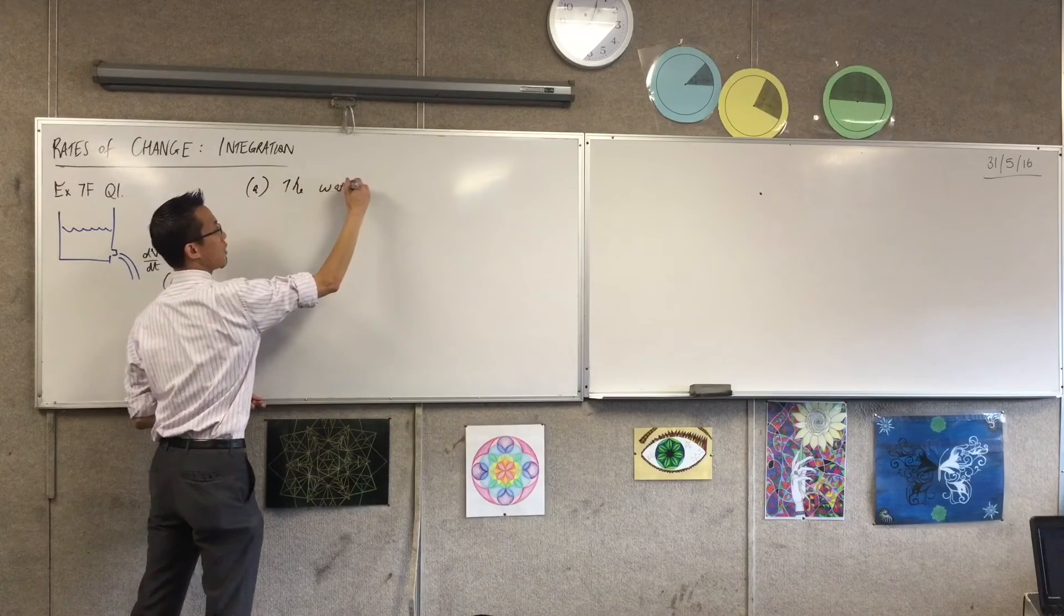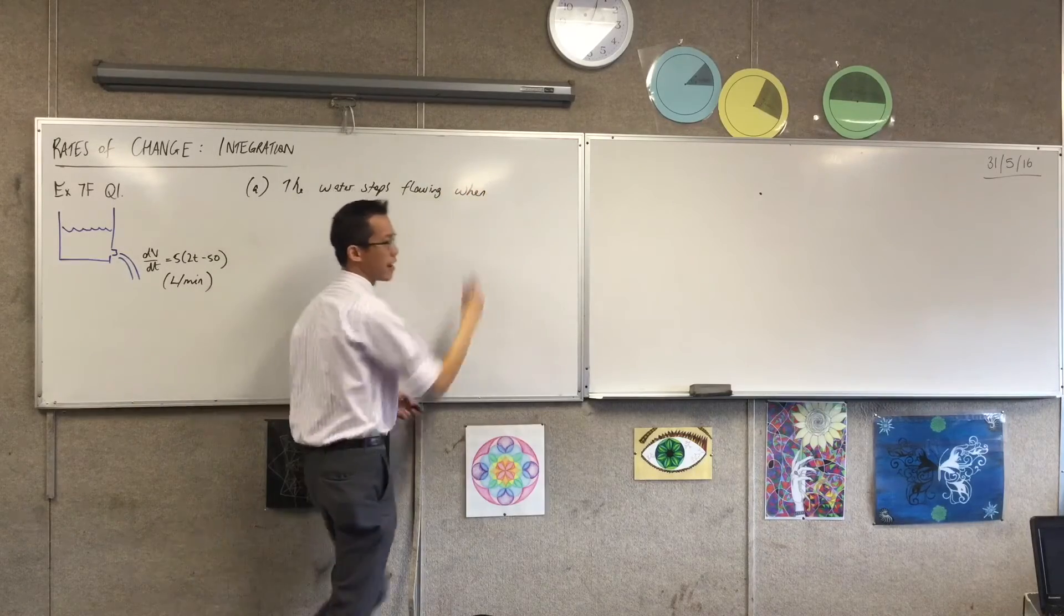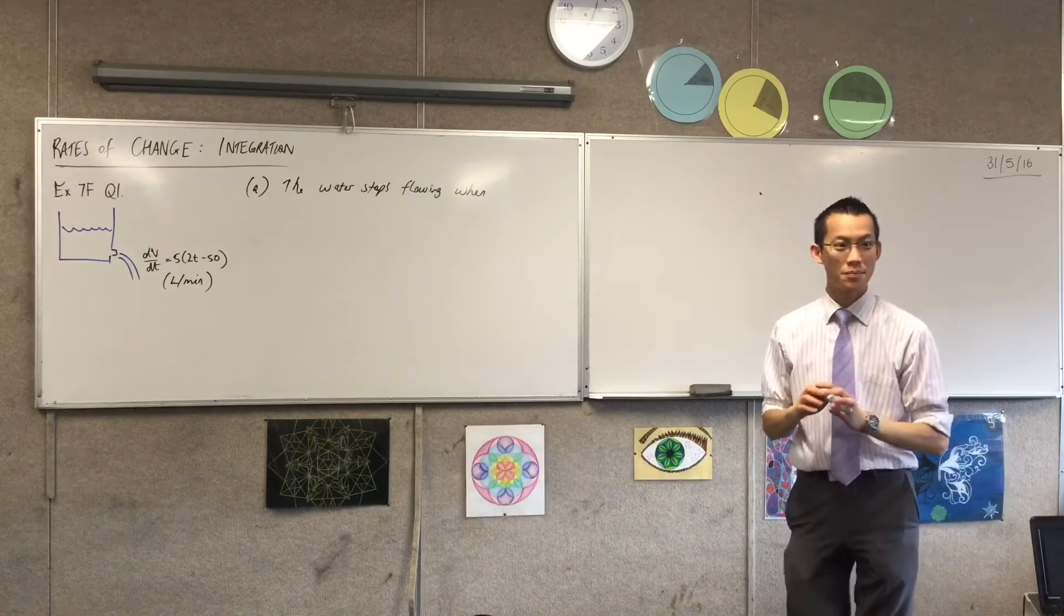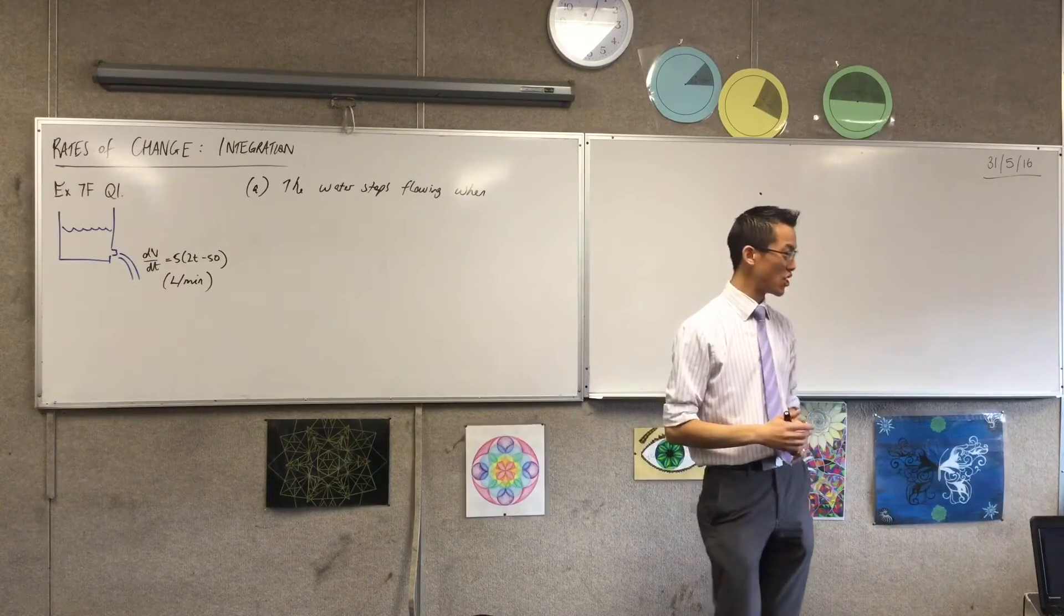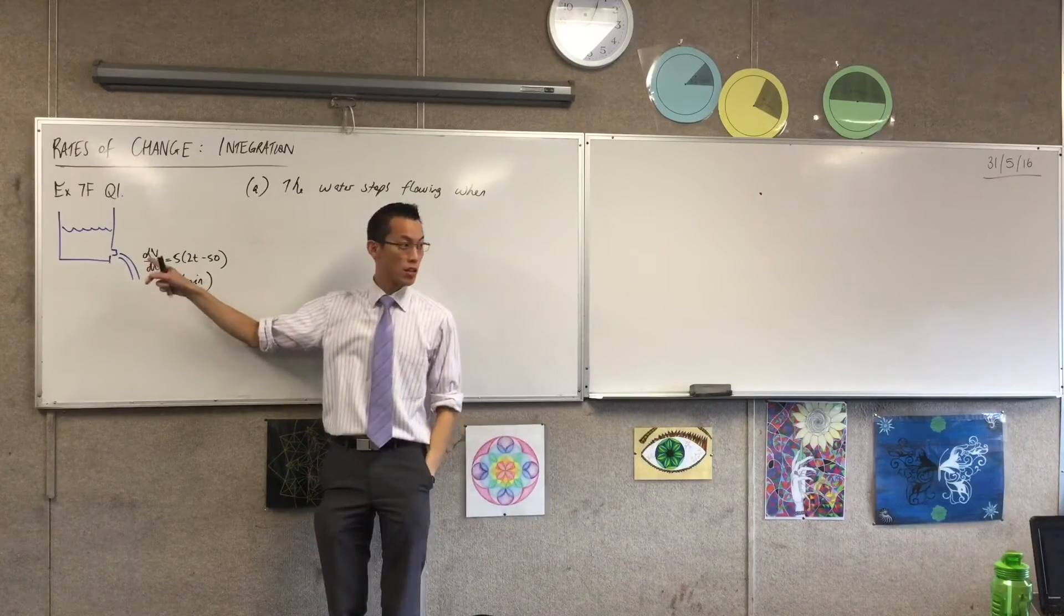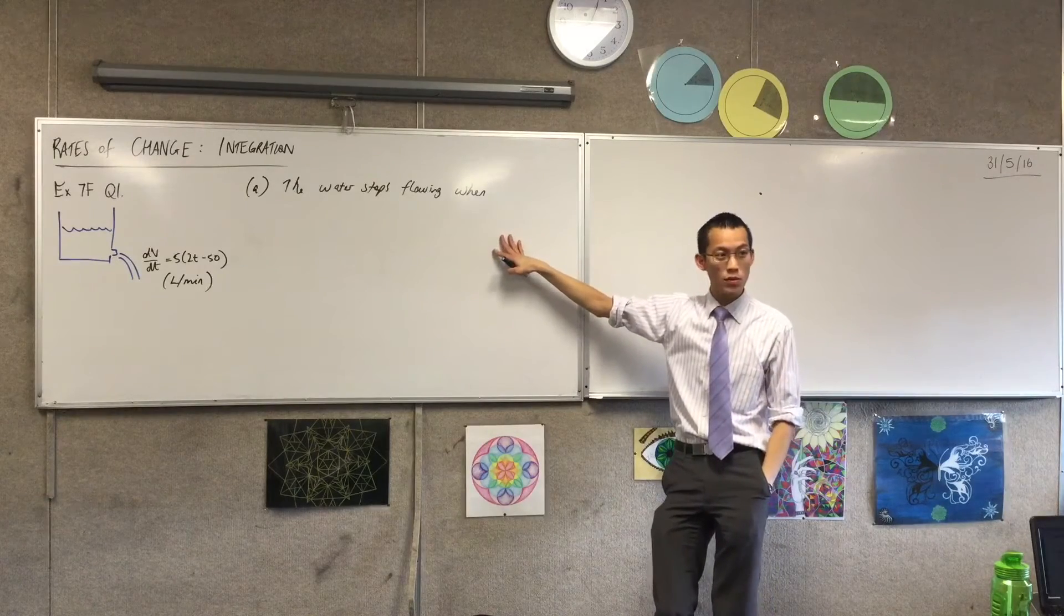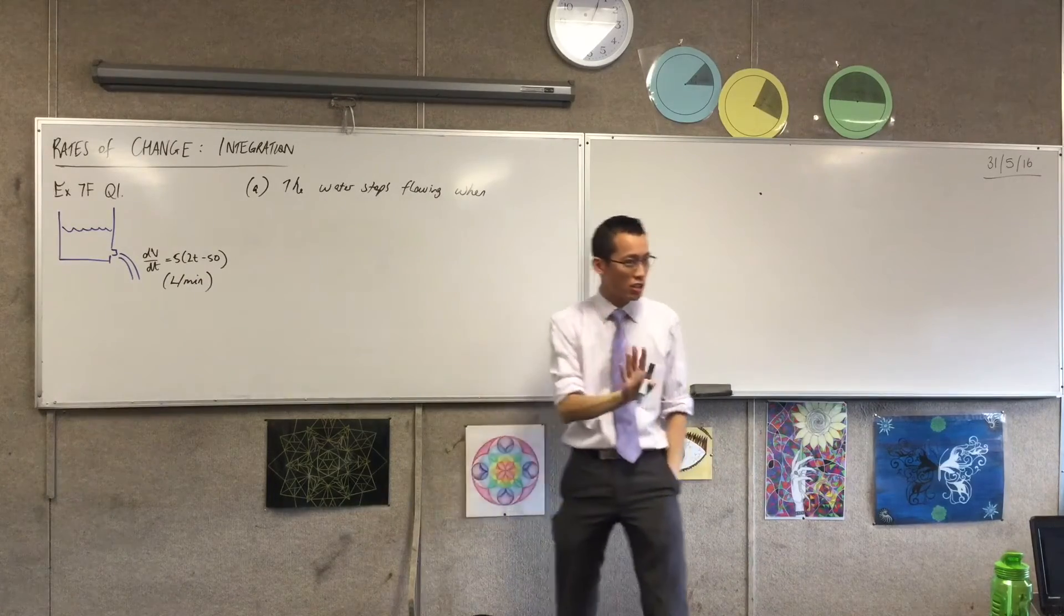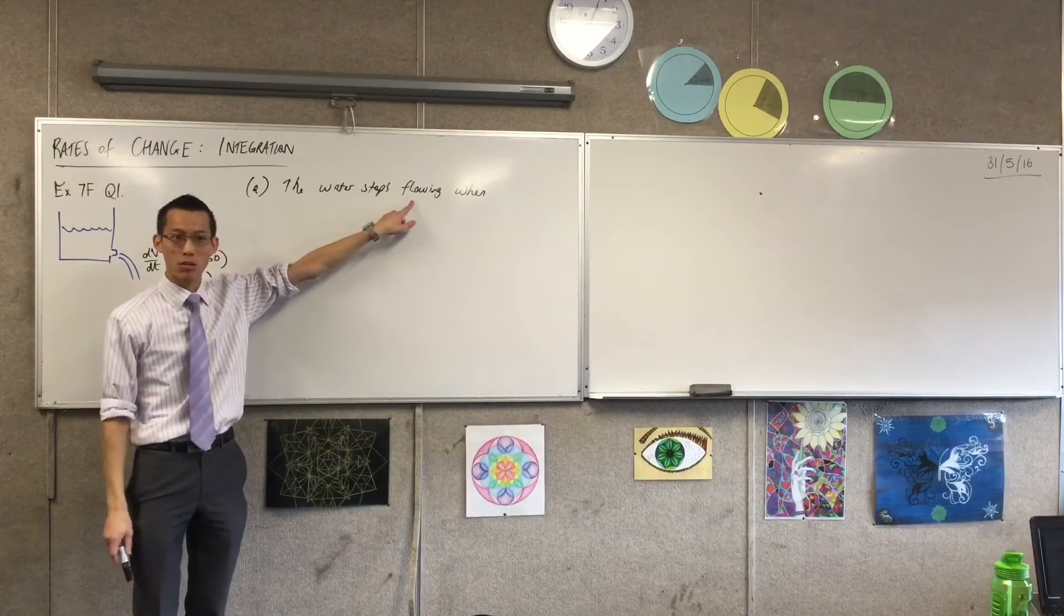So I'm literally going to say the water stops flowing. Now what does it mean for the water to stop flowing? Well, that means what can we say about the volume at that time? Now interestingly, I don't have an expression for volume at the moment. I will get one shortly, but I don't have an expression for the volume. But I do have an expression for how the volume is changing. In other words, it's not changing anymore, because it's not flowing anymore. Does that make sense?